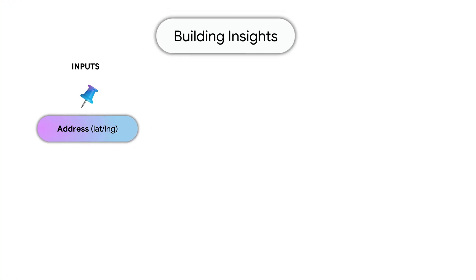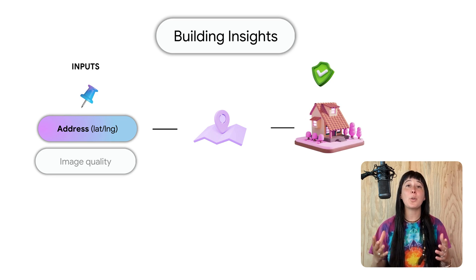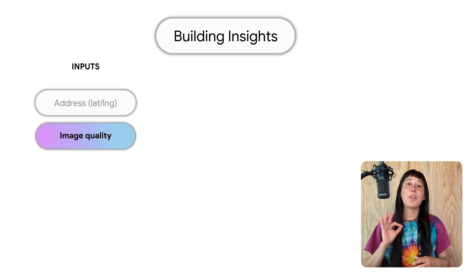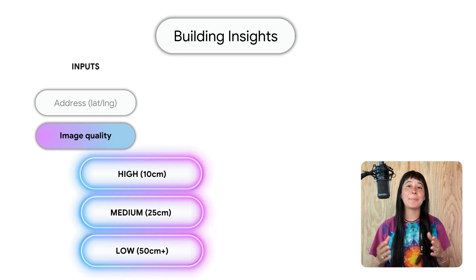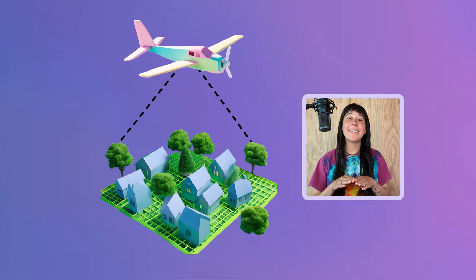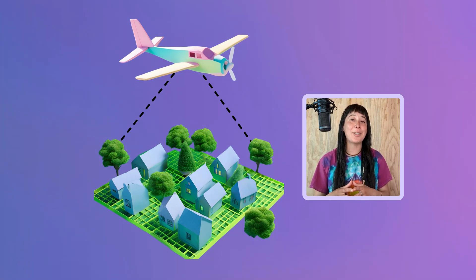We first start by passing an address as a lat-long location for a building. Note this endpoint in particular requires the lat-long to correspond to a building, otherwise we don't return data. It also needs us to choose a minimum quality level. There are three types of imagery quality: high, medium, and low. This is imagery from airplanes stitched together to get a top-down view, and may also be AI-enhanced if it was taken at higher altitudes in order to convert it into lower-flying images.